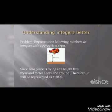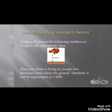The first problem is: we have to represent the following numbers as integers with appropriate signs. You can see that an aeroplane is flying at a height of 2000 meters above the ground. Above the ground, we always take a positive sign. So our answer will be plus 2000.